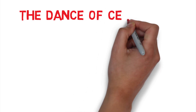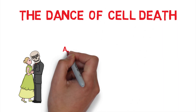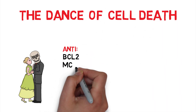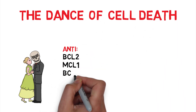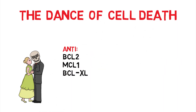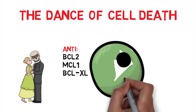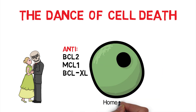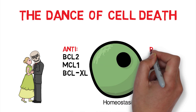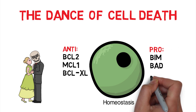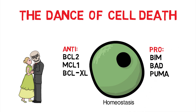Anti-apoptotic members, like BCL2, MCL1, and BCLXL, live in homeostasis with, and bind to, and cancel out, pro-apoptotic members such as BIM, BAD, and PUMA.